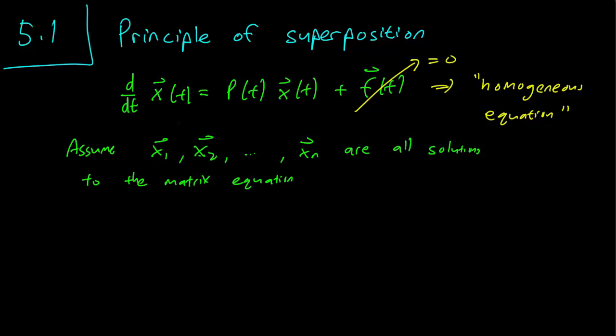We then have that y equals c1 x1 plus c2 x2 plus ... plus cn xn is also a solution. Very similar to what we've dealt with in the past.